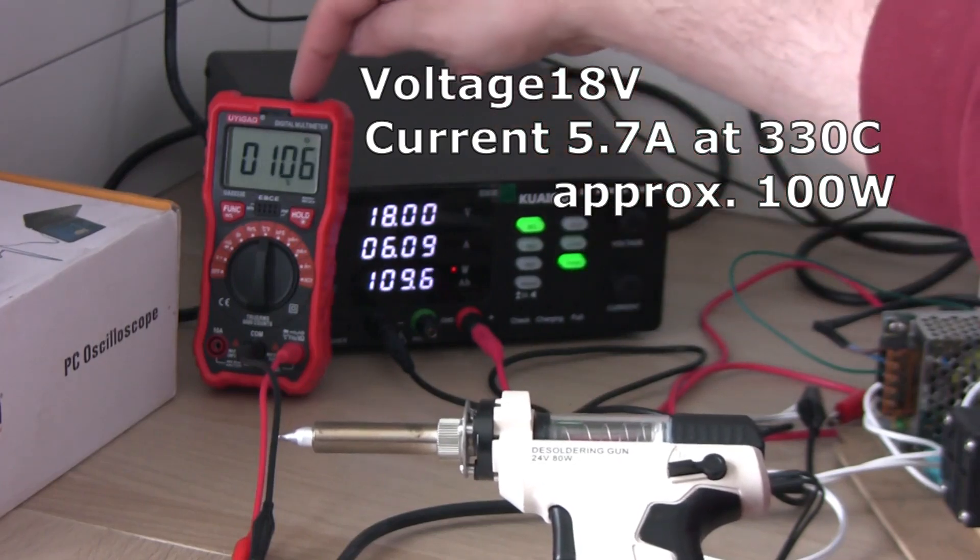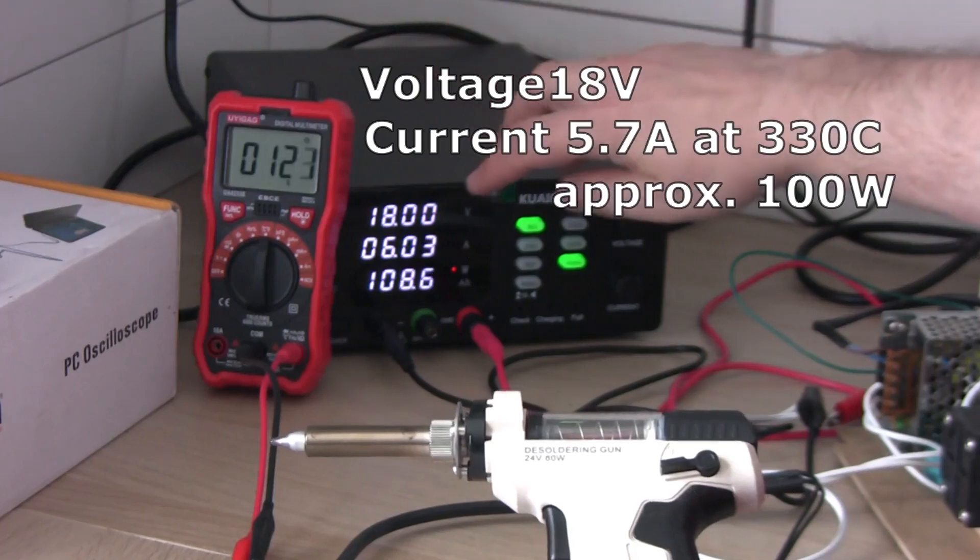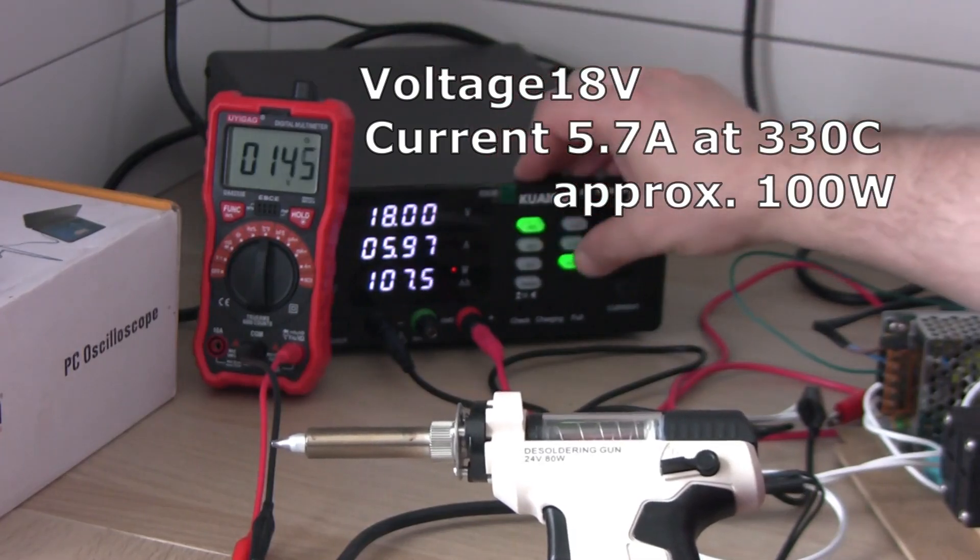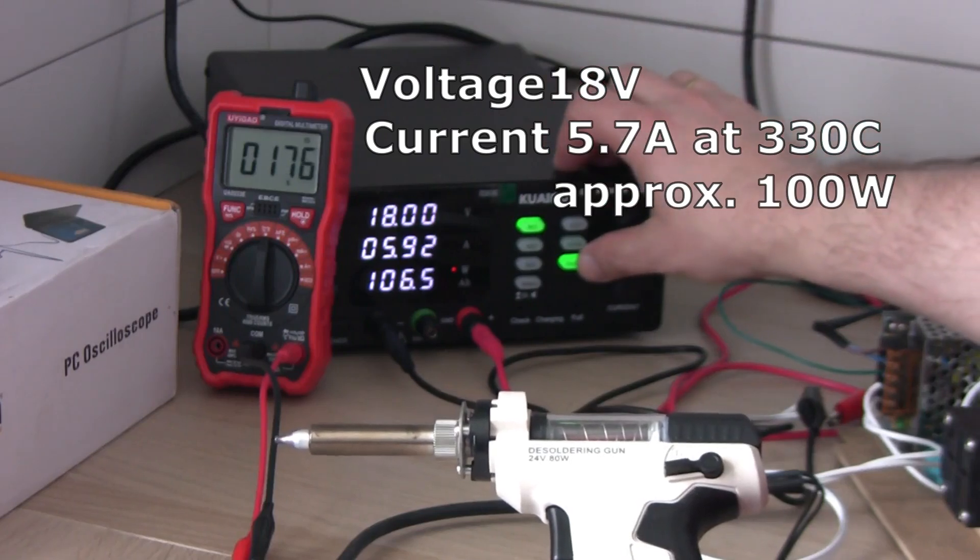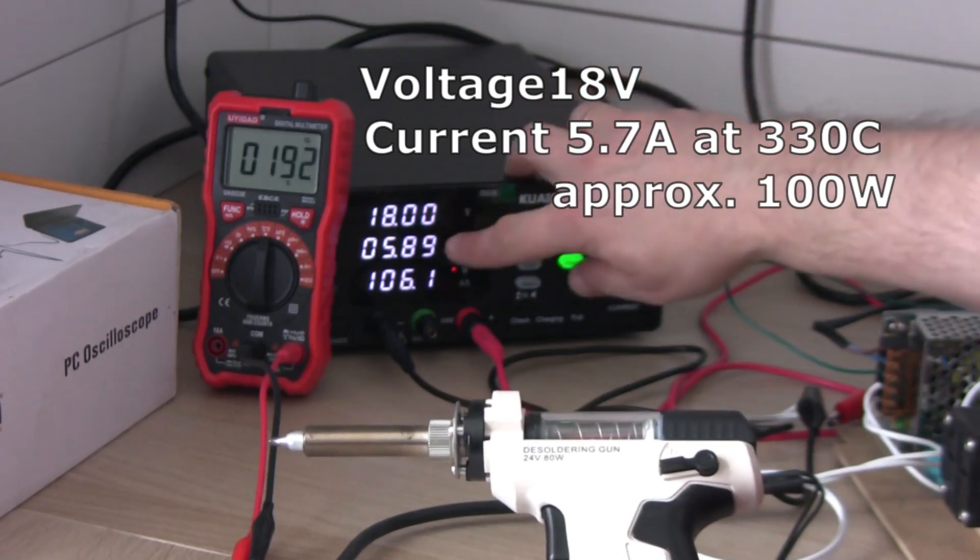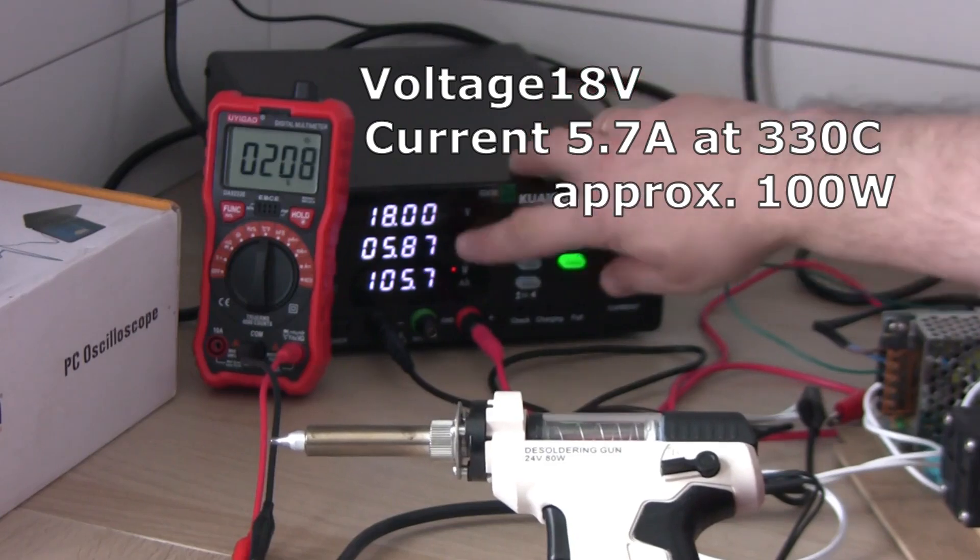As you can see, the temperature is rapidly raising and the amps are going down as the heating element is heating up. So right now we have under 6 amps and 100 watts.